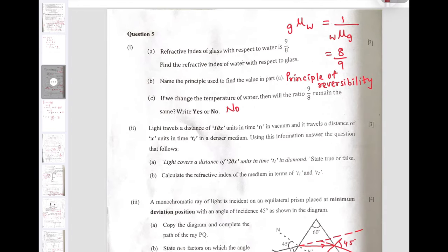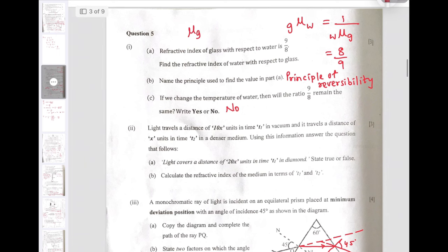Question number 5, first A: Refractive index of glass with respect to water is given 9 by 8. We have to find the refractive index of water with respect to glass. According to the principle of reversibility, we can write the statement and the required answer is 8 by 9. In B, we are asked to write the principle, that is principle of reversibility.